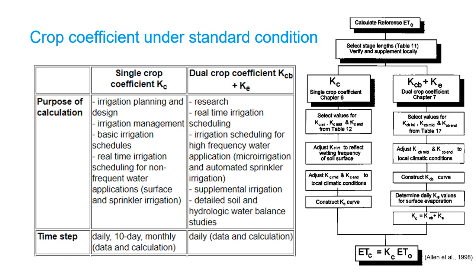The steps to determine Kc or KcB plus Ke detailed in the FAO56 report are summarized in this flowchart. After calculating reference evapotranspiration, we need to select the length of growth stage from a reference table and adjust based on the local crop calendar. Then select values for Kc or KcB for each crop growth stage: initial, mid-season, and late-season. After that, we need to adjust Kc and KcB for wetting frequency of the soil surface and local climatic conditions. For the dual crop coefficient method, the daily soil evaporation coefficient Ke needs to be determined and added to KcB. Finally, we can determine crop evapotranspiration by multiplying reference crop evapotranspiration with the crop coefficients.